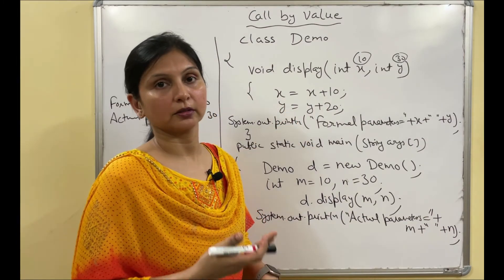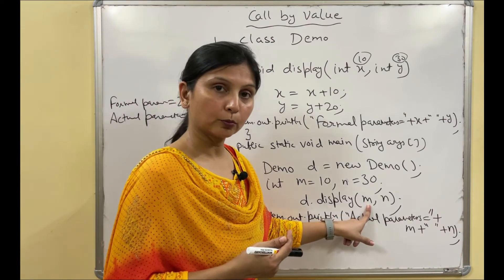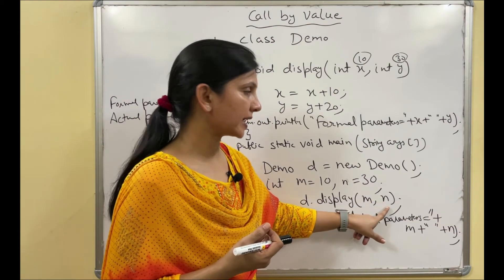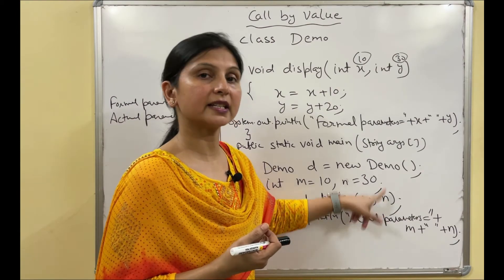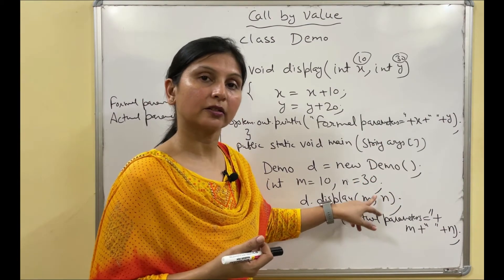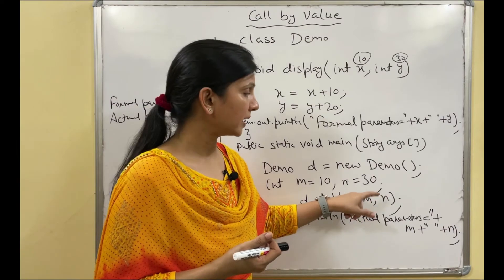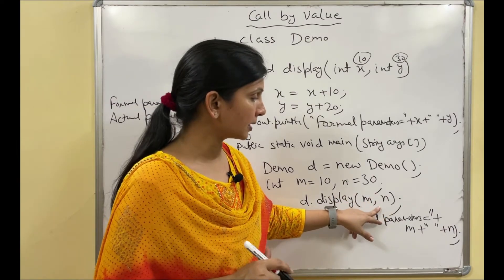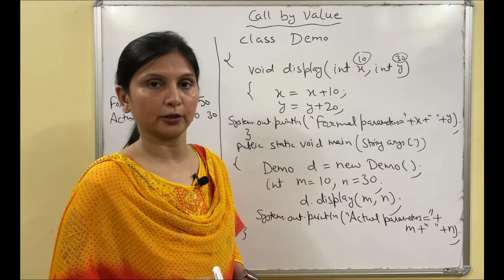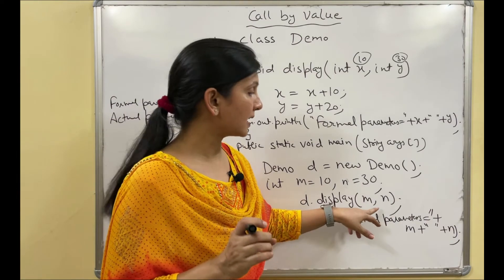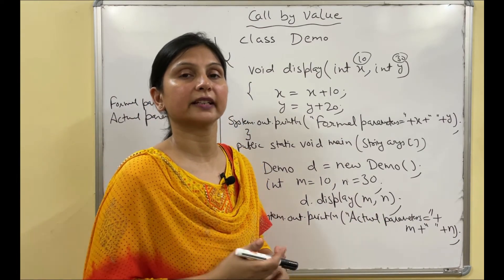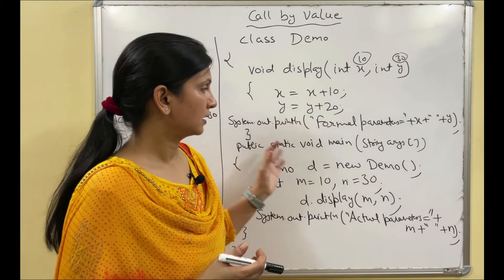One important point: whenever we pass a primitive data type as an actual parameter — such as int, float, double — it is call by value by default. In call by reference, we always pass an object or array. Since we haven't covered arrays yet, we'll use an object as the example.